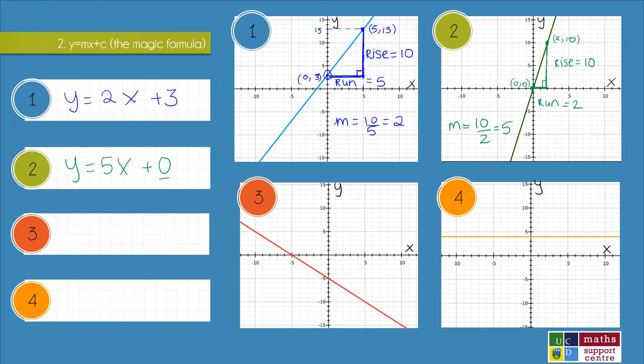Whenever you have a 0 or no constant at the end, that means that your line is going to pass through the origin. OK, moving on to the third line here.